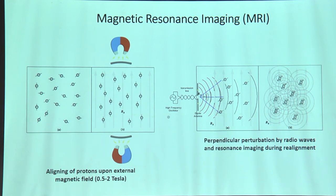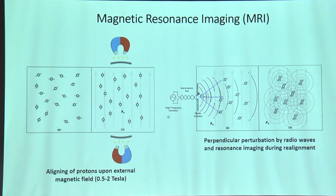The most prominent magnetic device in the medical field is magnetic resonance imaging. Here I want to make clear how SQUID is different from MRI. In an MRI, your body is full of protons — imagine a playground where school kids are running around randomly. Then a school principal, the huge magnet, asks them to line up. Each proton has its own spin and is aligned with the magnetic field.